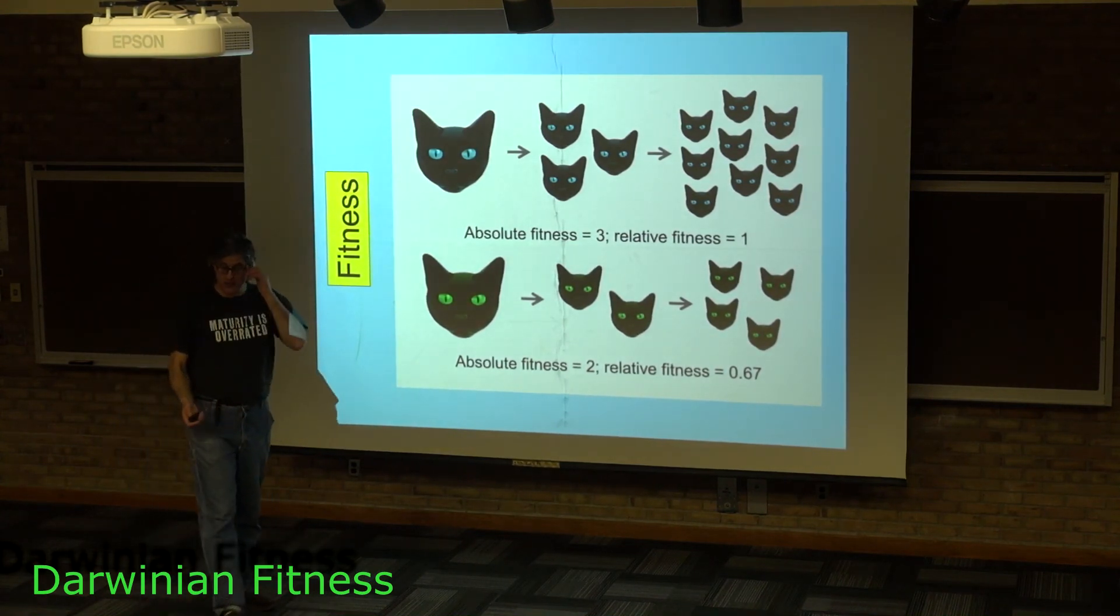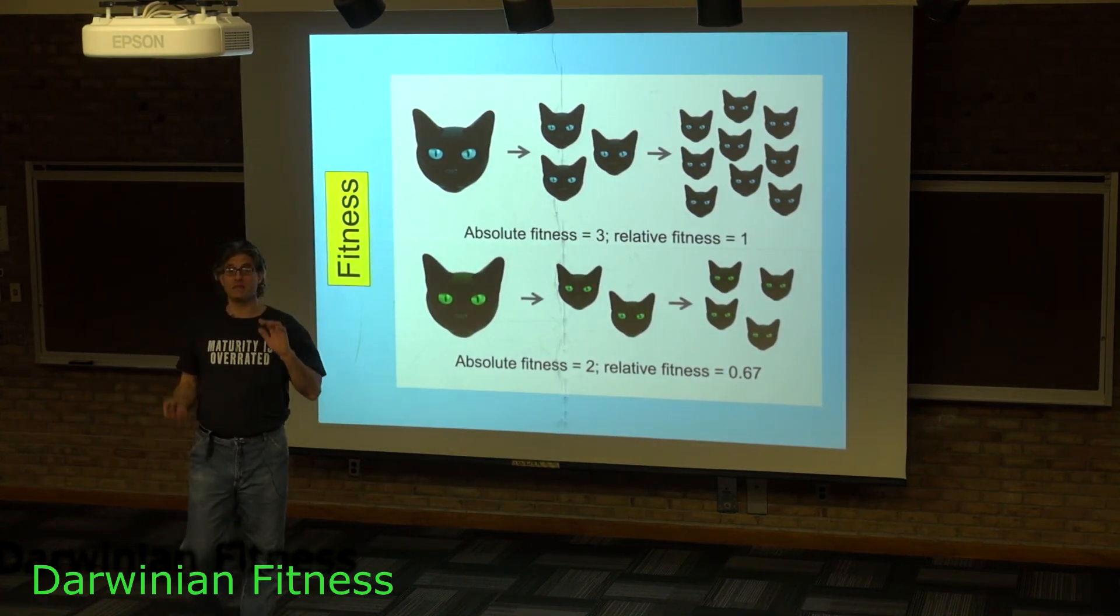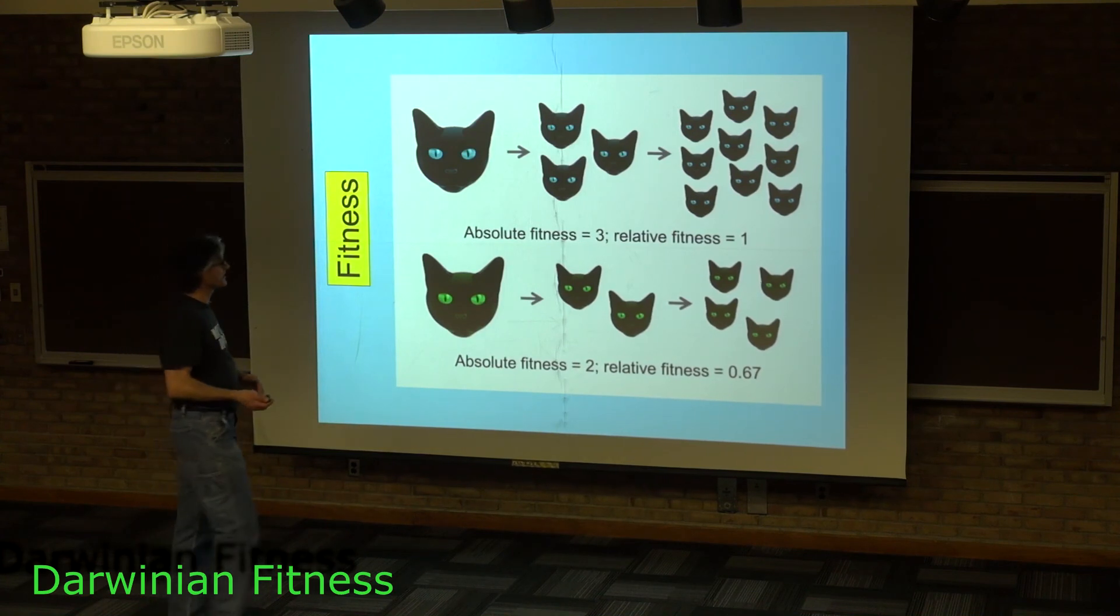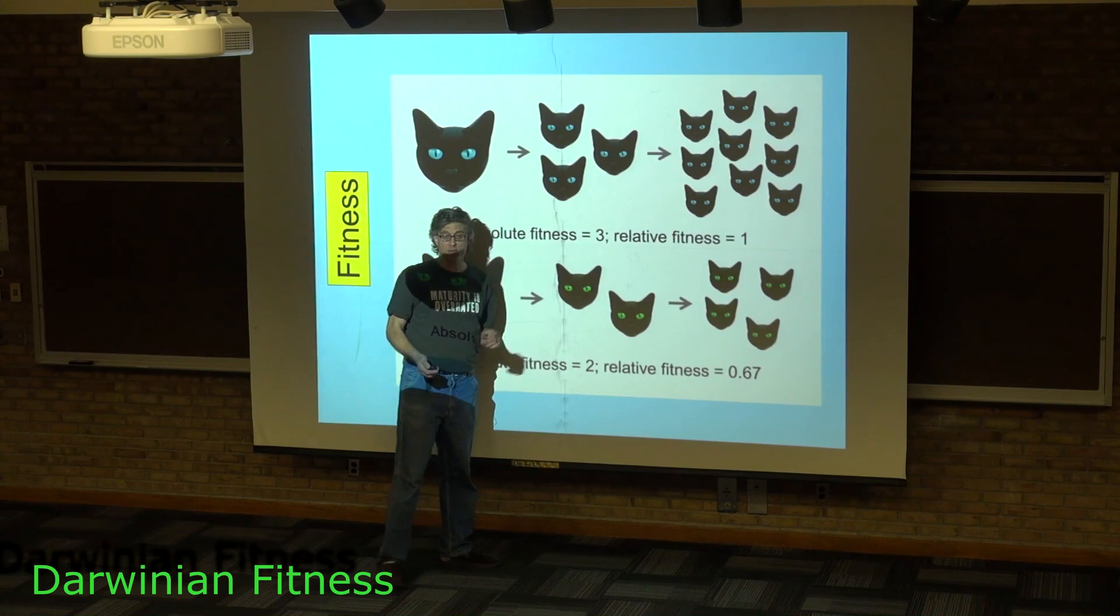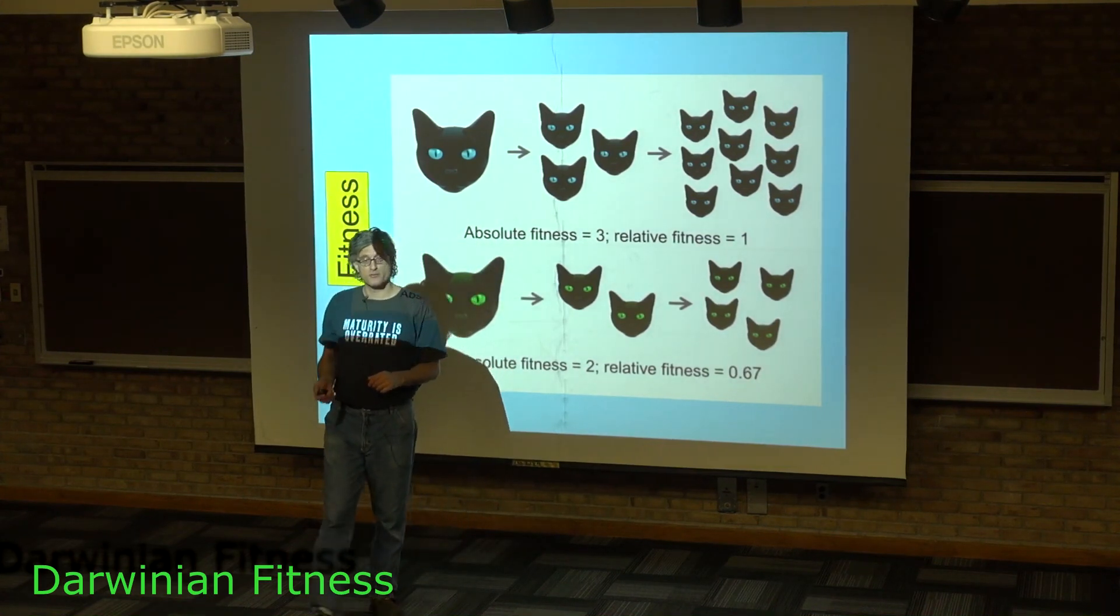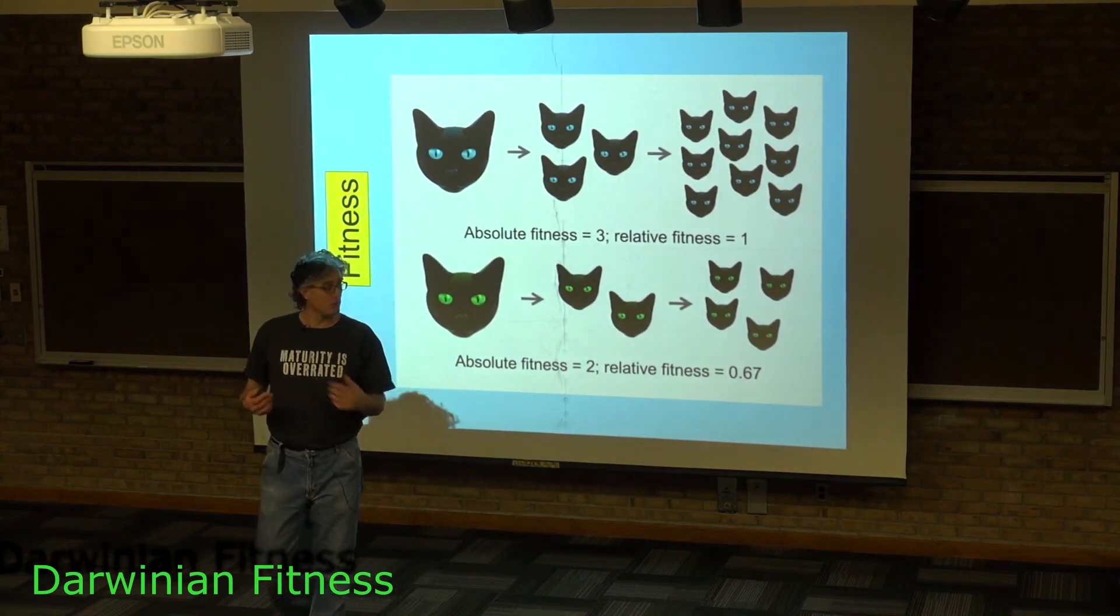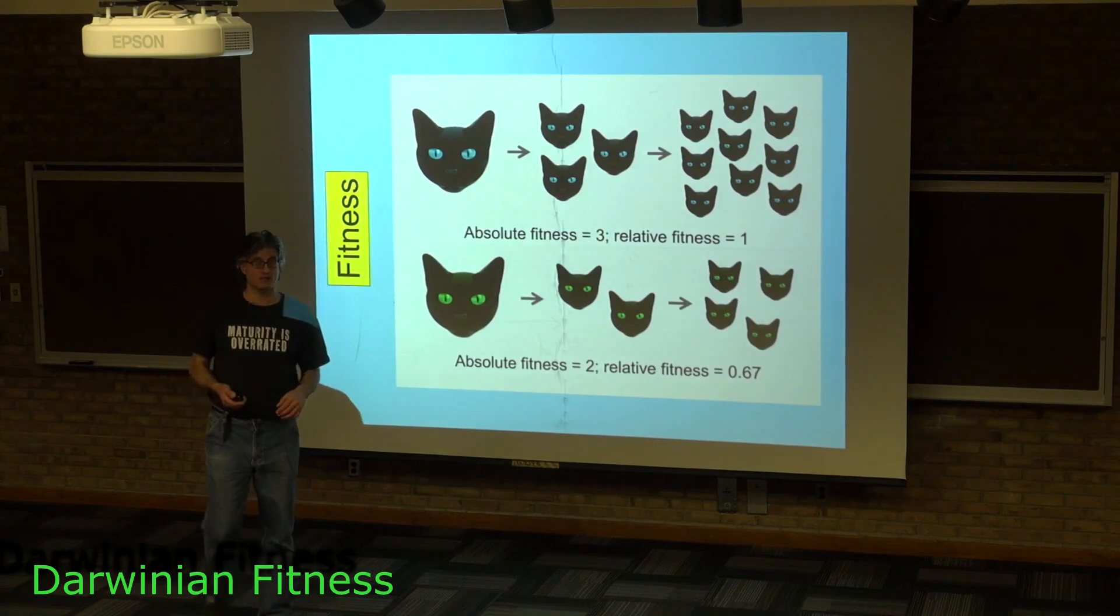But fitness, the general concept of fitness, is simply a measure of natural selection. When something has a higher fitness, it's being favored by natural selection. When something has a lowered fitness, natural selection is removing it from the population at a faster rate.